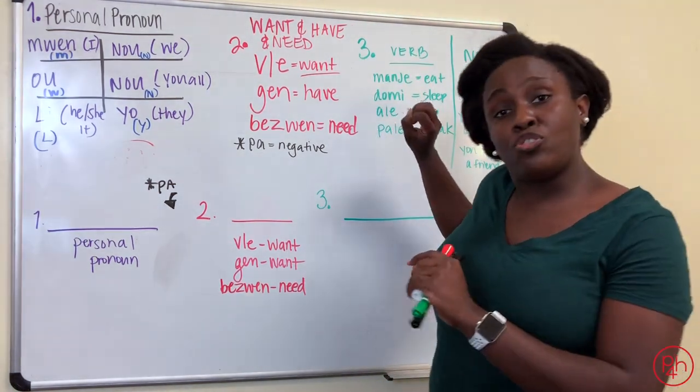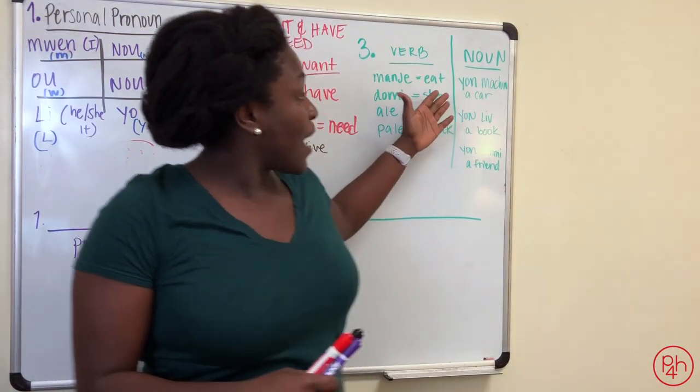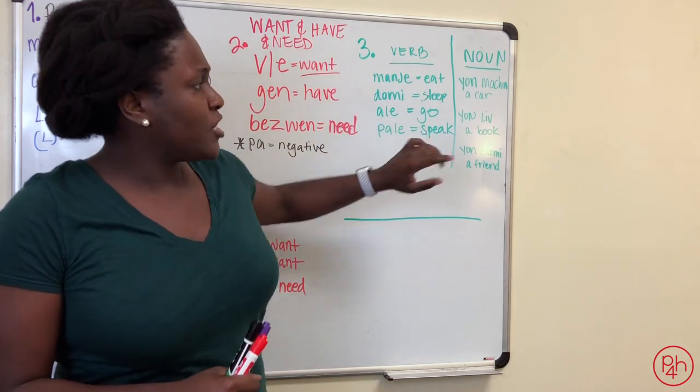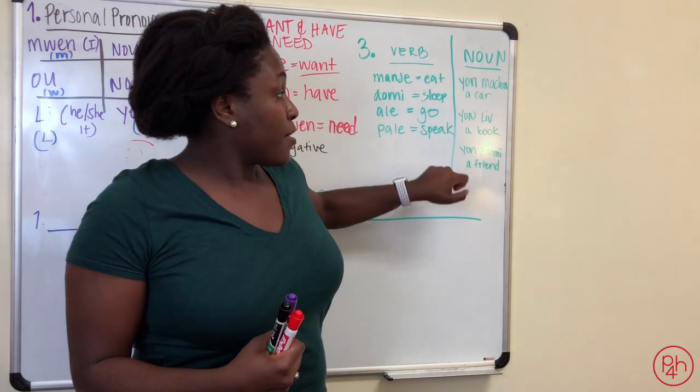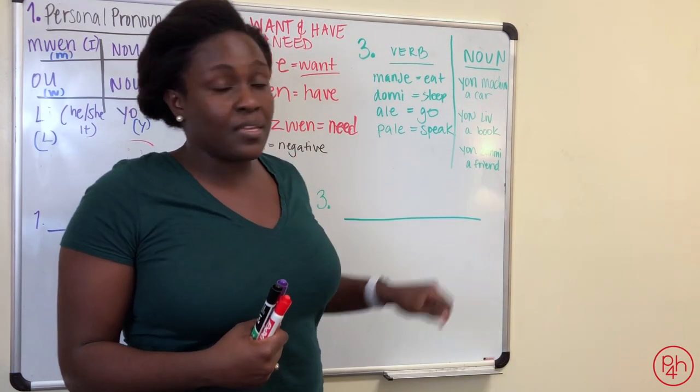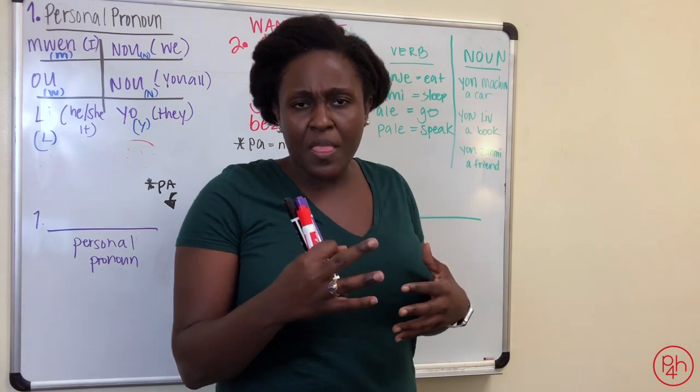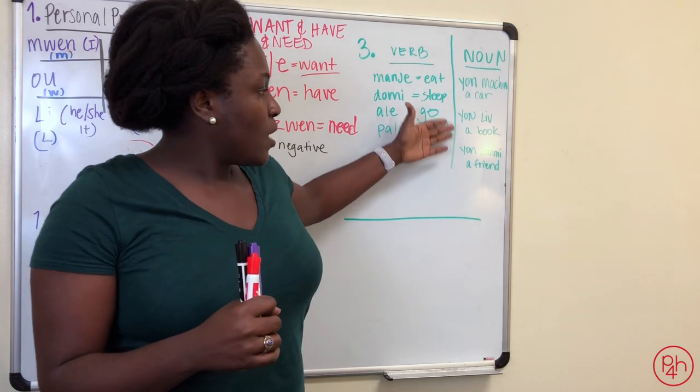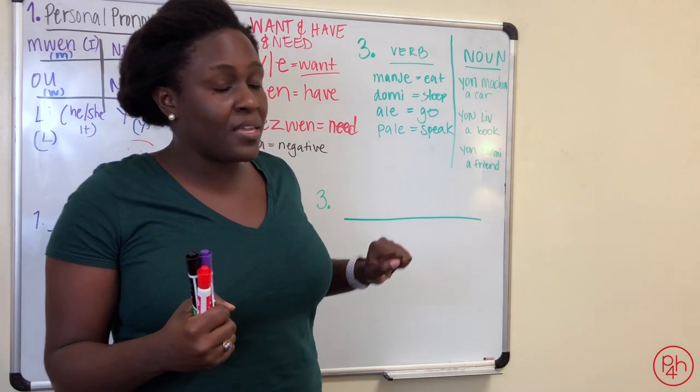So you can do the verb. If you don't want to do the verb, you can also do a noun. And with our nouns, we have, let's say, yon machin. Now, very, very simple. Yon means a, or an. Yon machin, a car. Yon liv is a book. Yon zami is a friend. And these are just a couple. I'll go ahead in the worksheet, give you guys a couple of more verbs and nouns to work with, but we're just gonna put out three.